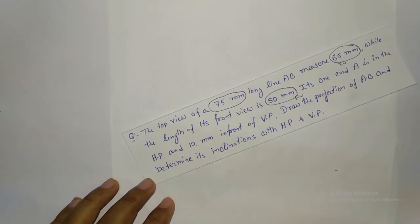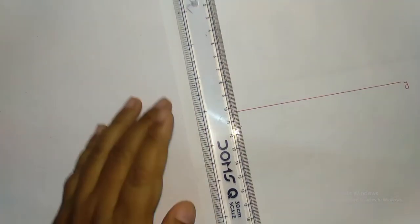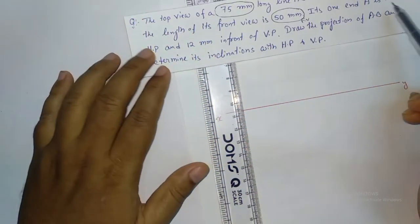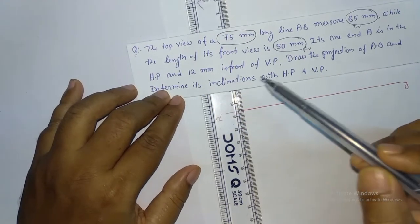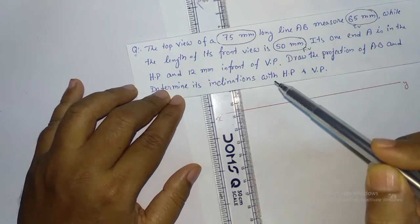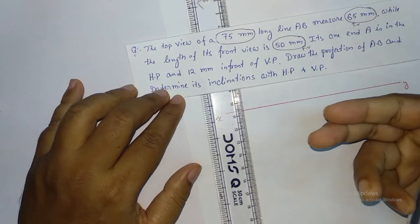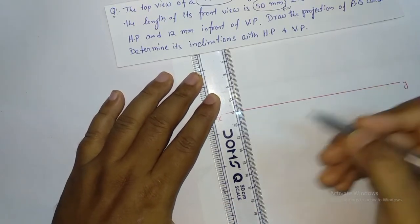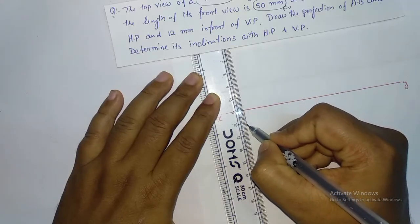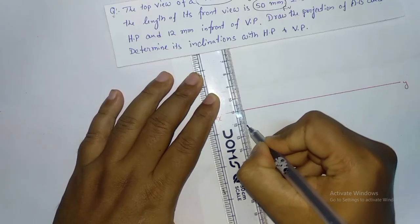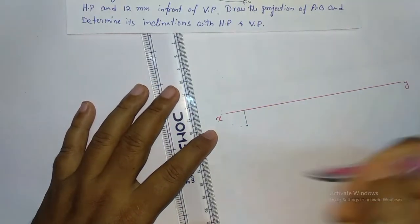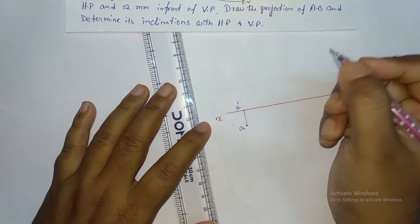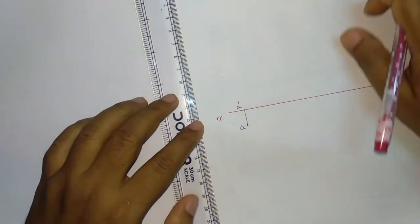Now I am going to start drawing. This is XY, the reference line. It is given that end A is in the HP, so point A lies on the XY plane. And 12 mm in front of the VP means it will be 12 mm below XY. So I mark point A and point A' (A dash). The first step is to mark A' and A.